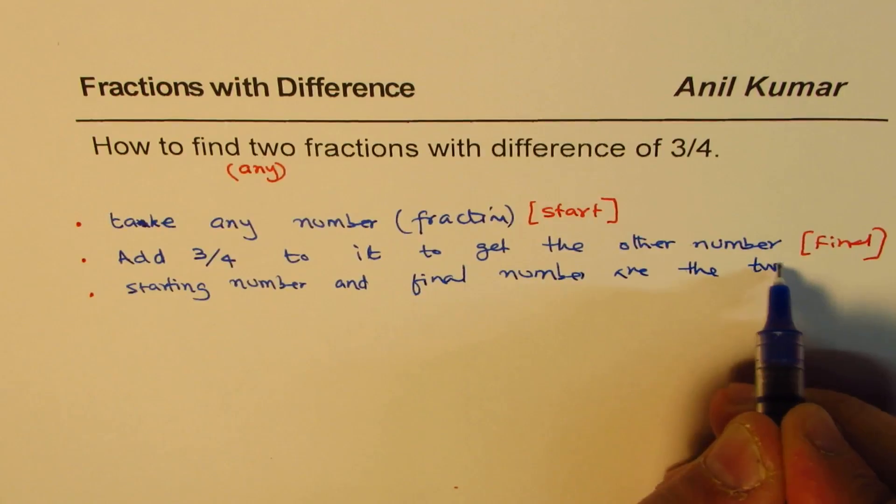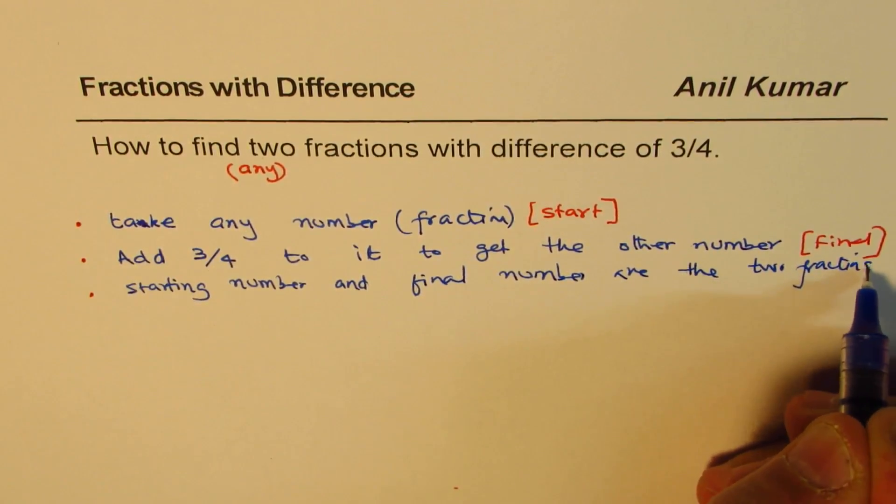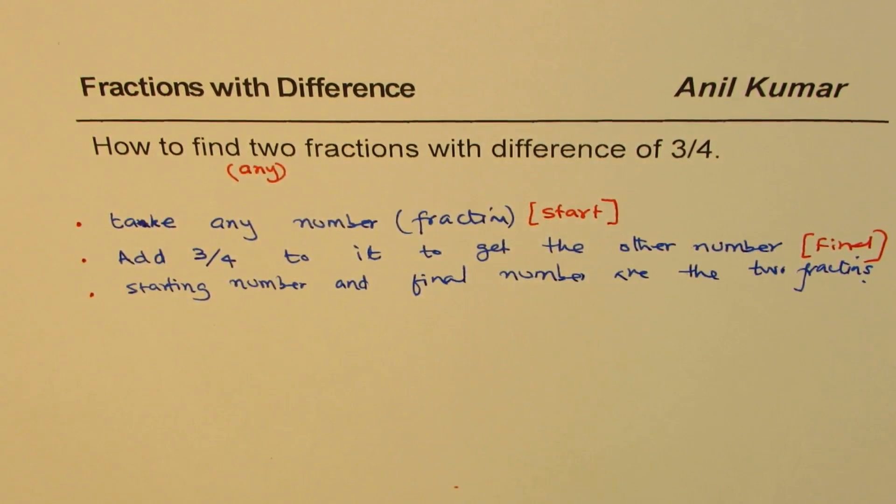Are the two fractions. Is that okay? Now, you say, well, if I start with 1, 1 is not a fraction. Every number like that is a fraction. 1 could be written as 1 over 1. Do you see that?